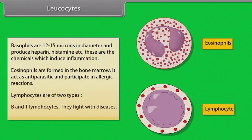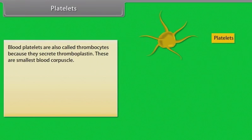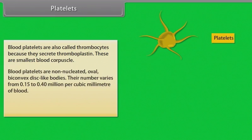Lymphocytes are of two types — B and T lymphocytes — and they fight with diseases. Blood platelets are also called thrombocytes because they secrete thromboplastin. These are the smallest blood corpuscles: non-nucleated, oval, biconvex disc-like bodies.